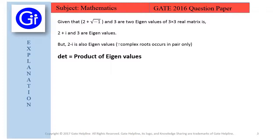Now we will see the explanation to this question. In this question, we are given that 2 plus under root minus 1 and 3 are two eigenvalues of a 3 × 3 real matrix P and we need to find the value of the determinant.